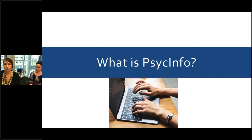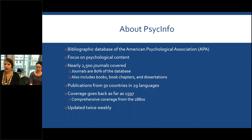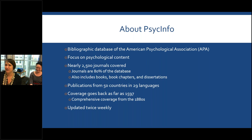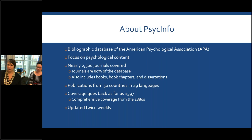So PsycINFO is a bibliographic database run by the American Psychological Association, or APA — the same people who do the APA citation style. There's a focus on psychological content, perhaps unsurprisingly. There are nearly 2,500 journals included, each with hundreds or thousands of articles, and journals comprise 80% of the PsycINFO database. But it also includes books, book chapters, dissertations and theses.